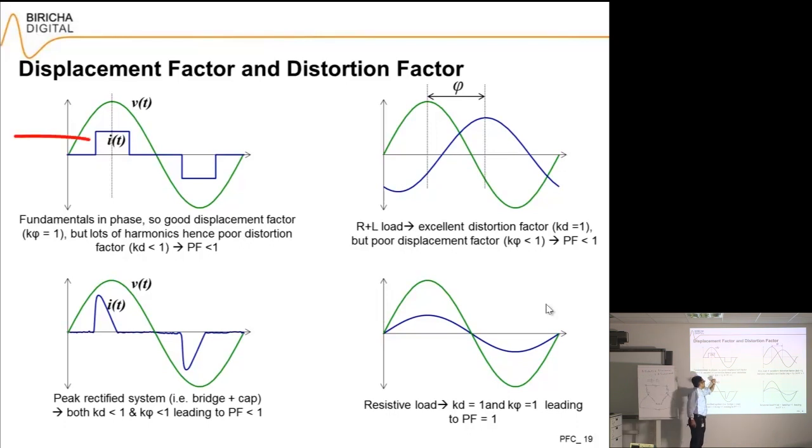my distortion factor is quite poor, so power factor will be less than one. I'm trying to achieve a power factor of one so that 100% of my power is real and it's delivered to the load.